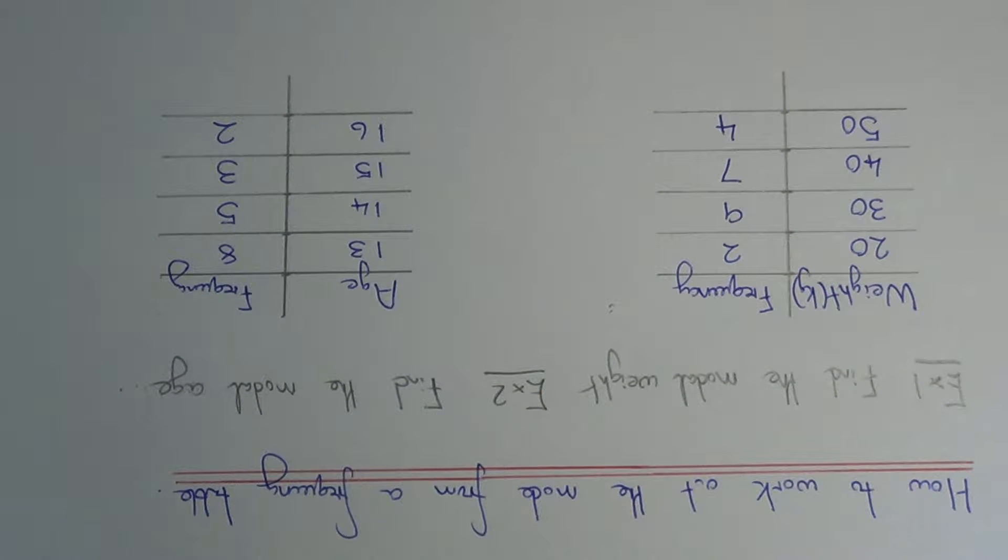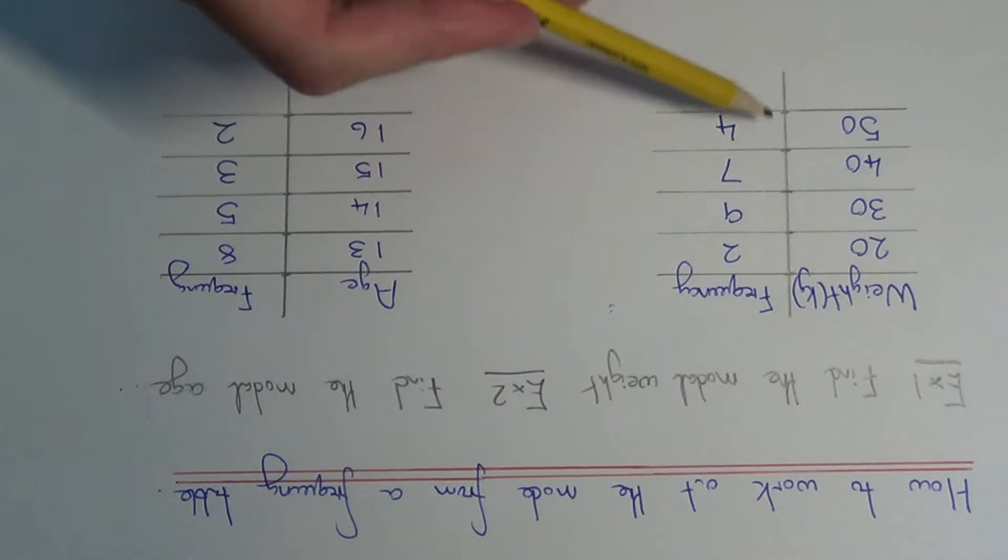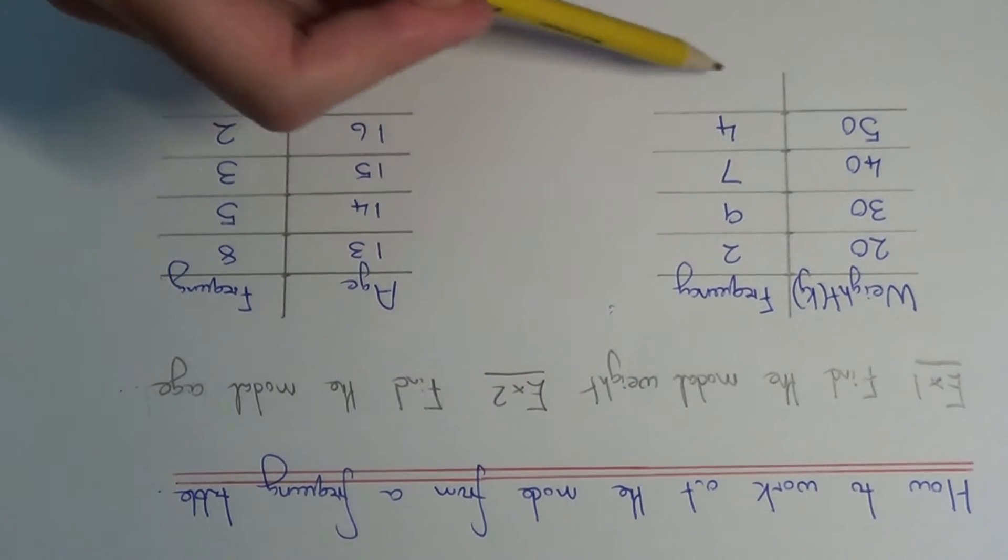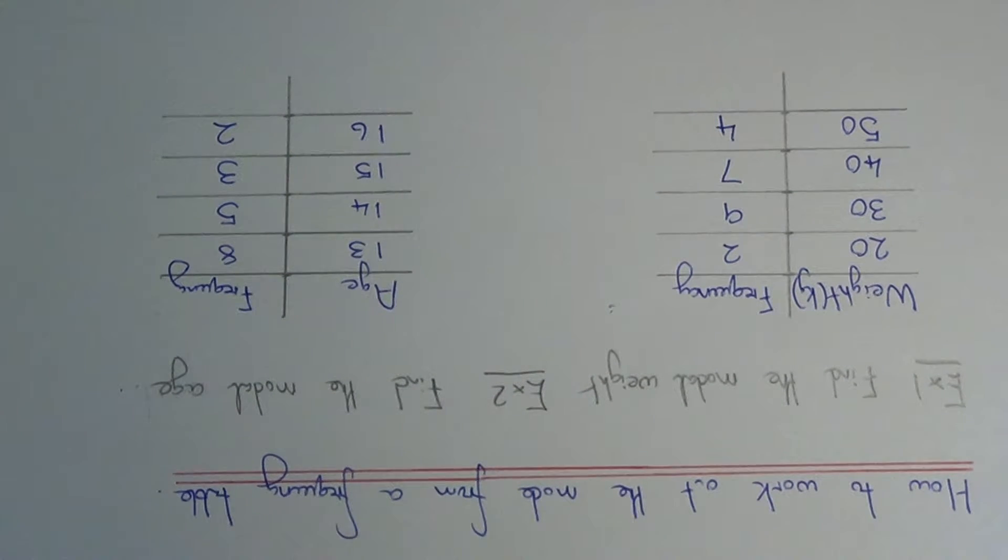Today I'm going to show you how to work out the mode from a normal frequency table. To do this, all you need to do is look in the frequency column and find the one with the highest frequency.